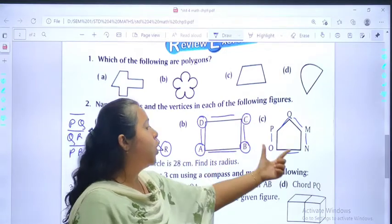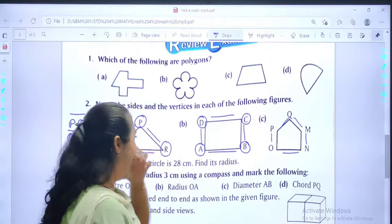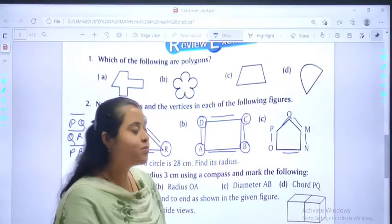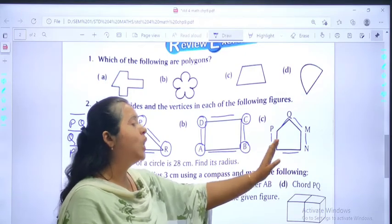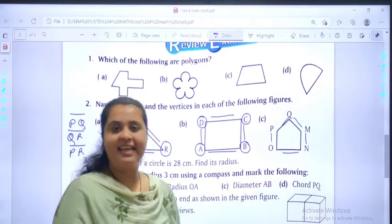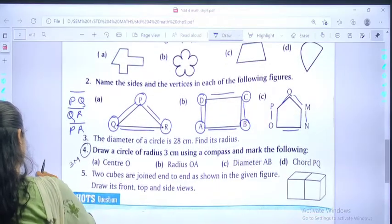QO, ON, NM, ML, and LQ. The vertices will be Q, P, O, N, and M. So, here we complete our question number 2.